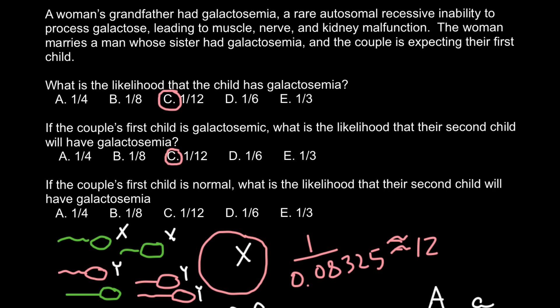If the question were rephrased — what is the probability that the couple would have two affected children — the answer would be different: we'd multiply 1/12 by 1/12 because neither event has happened yet. Question three: if the couple's first child is normal, what is the likelihood that the second child will have this genetic disorder? The answer is again the same — 1/12. No matter whether the first child has the disorder or not, it in no way affects the probability of the next child being affected.